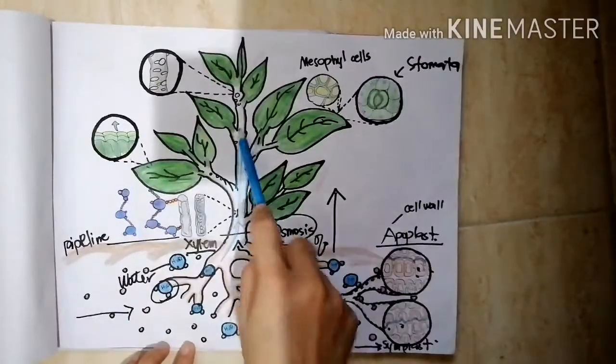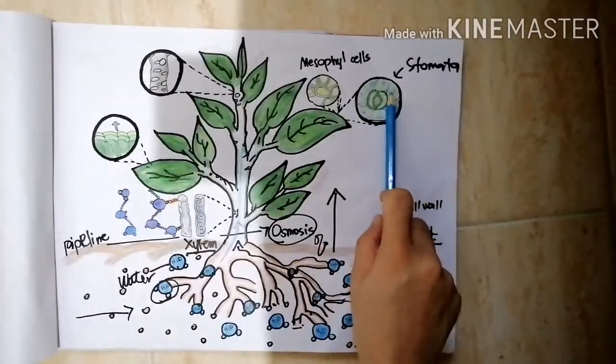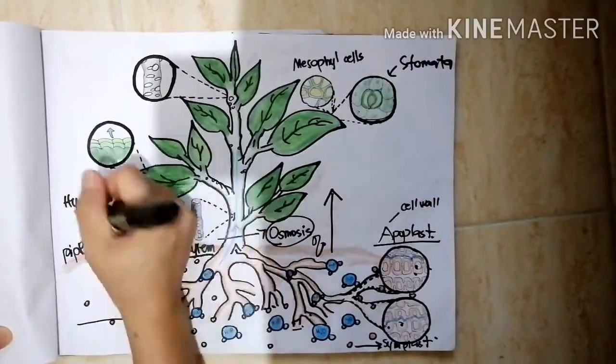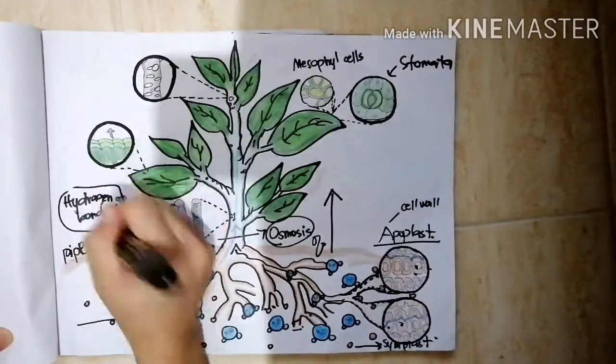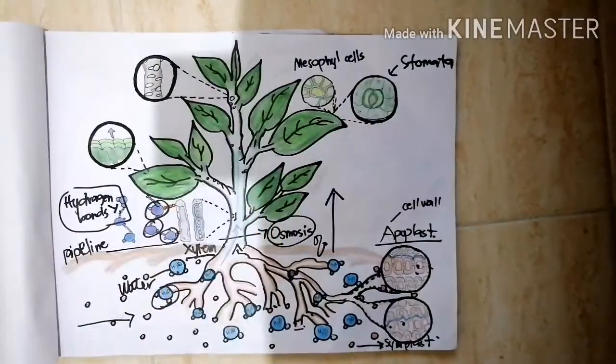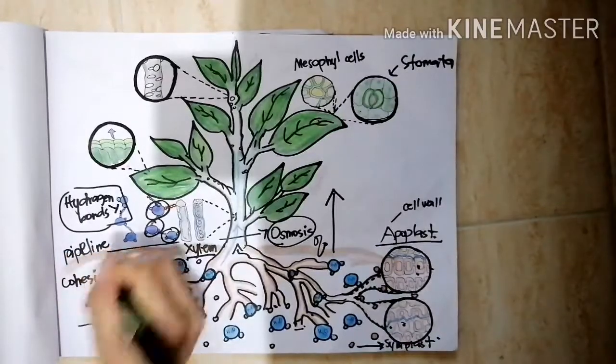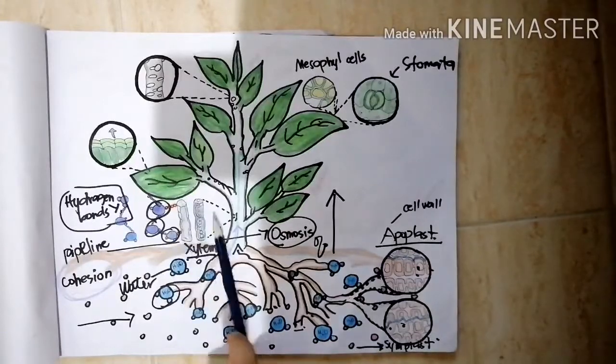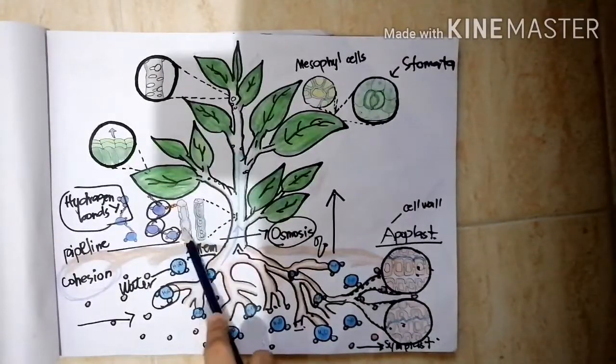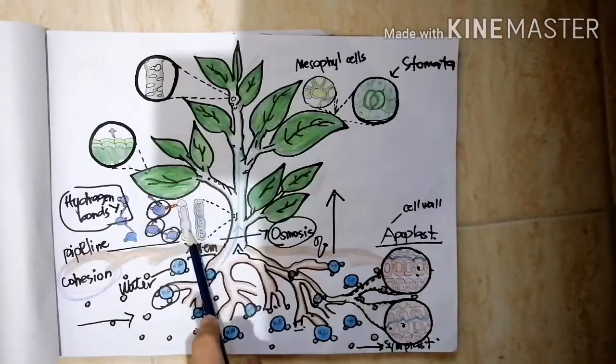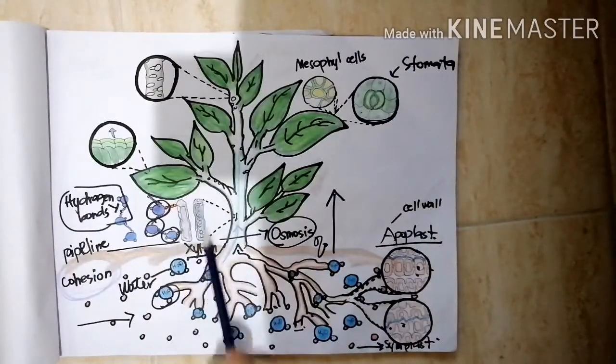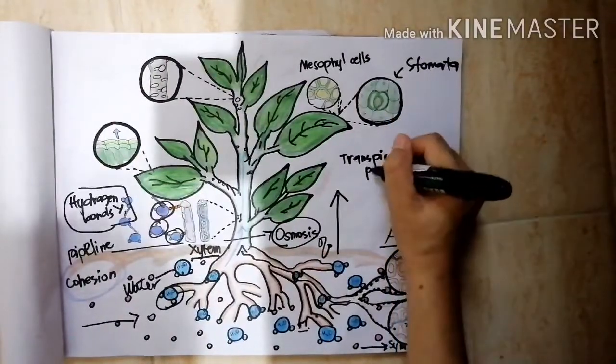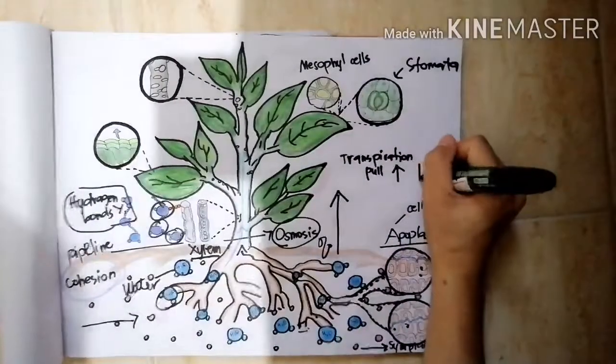Transpiration exerts a pull of water molecules upwards to the stomata to be evaporated. Hydrogen bonds in the xylem cause the water molecules to stick together, a phenomenon called cohesion. The adhesion of water to walls of the xylem cells helps to keep gravity from pulling the water molecules back down. The transpiration pull helps water rising to the leaves against the force of gravity.